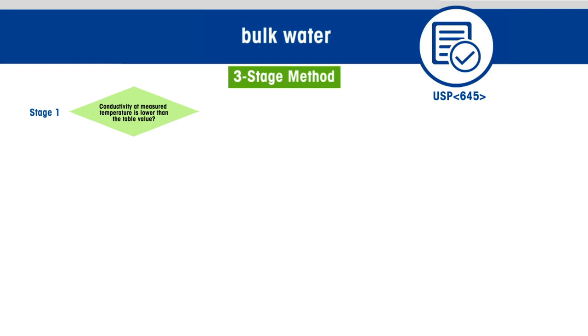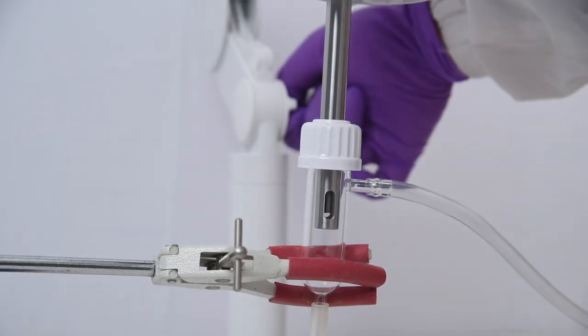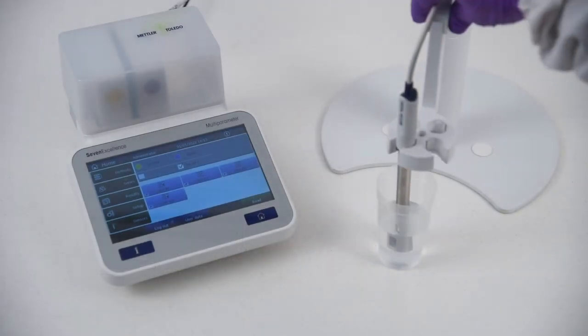For stage one, conductivity and temperature are measured. If the conductivity at the measured temperature is lower than the table value, the water meets the requirements. This stage can be performed using a flow-through cell for an online measurement or performed in a suitable container without stirring.